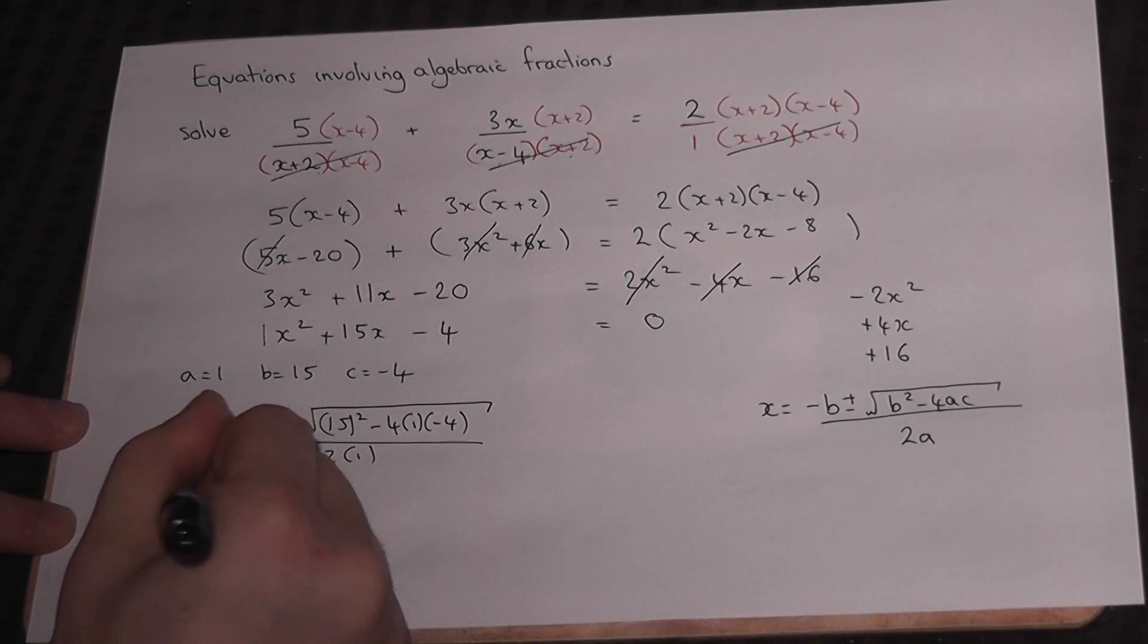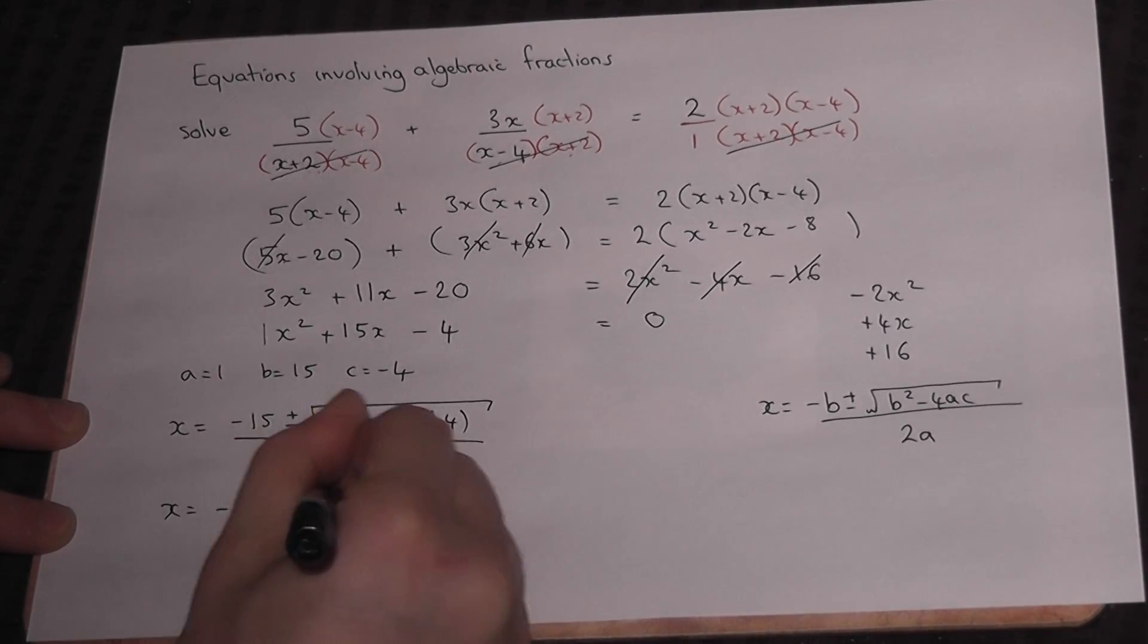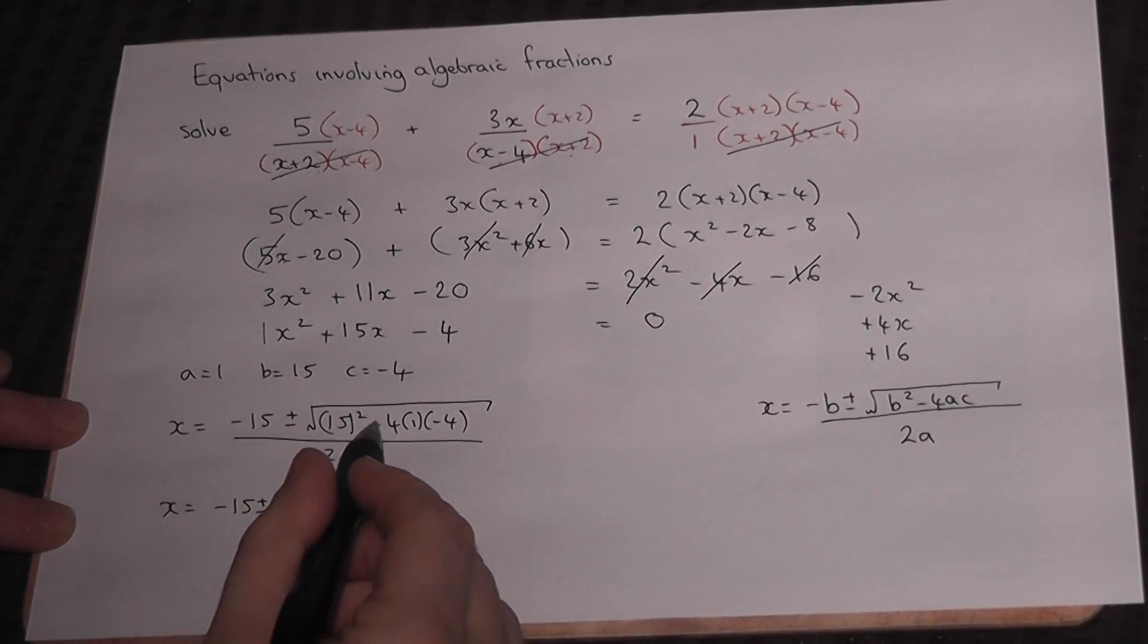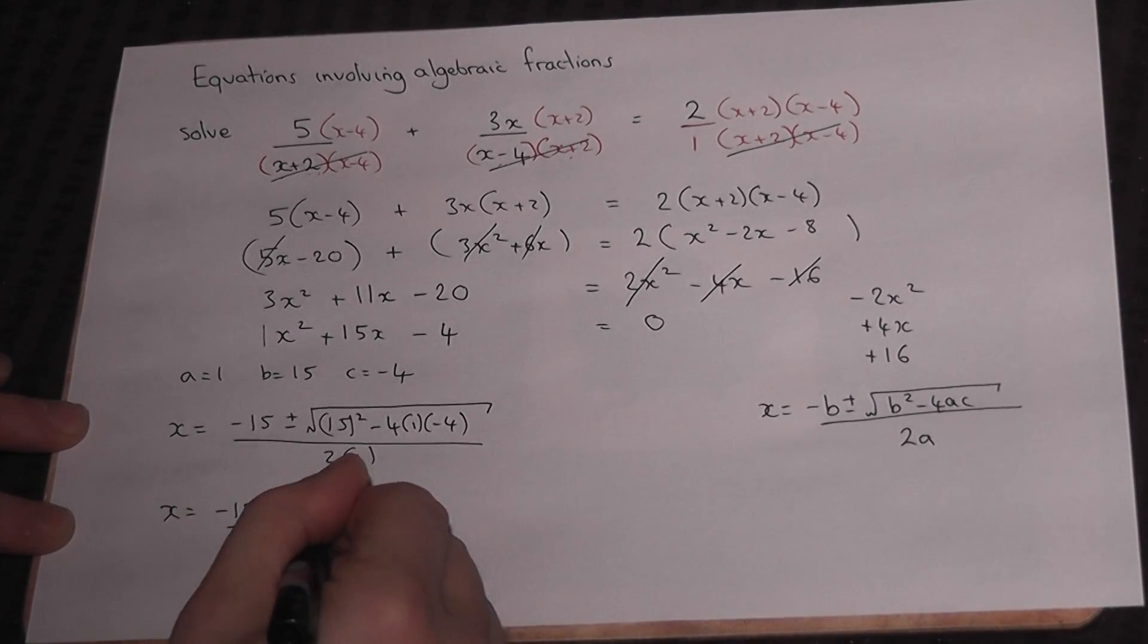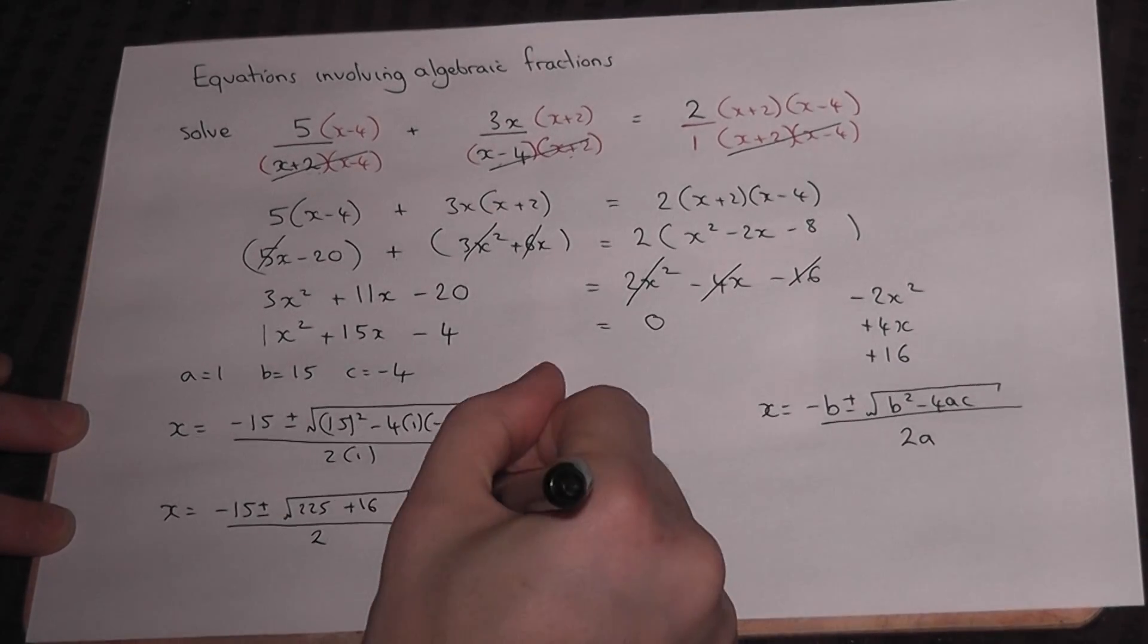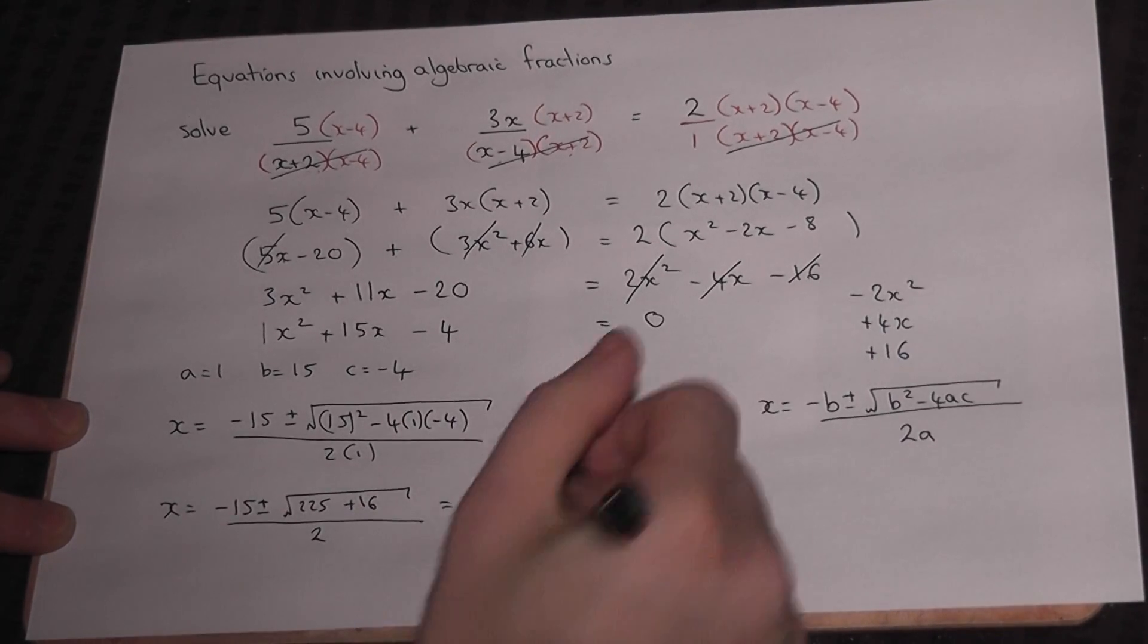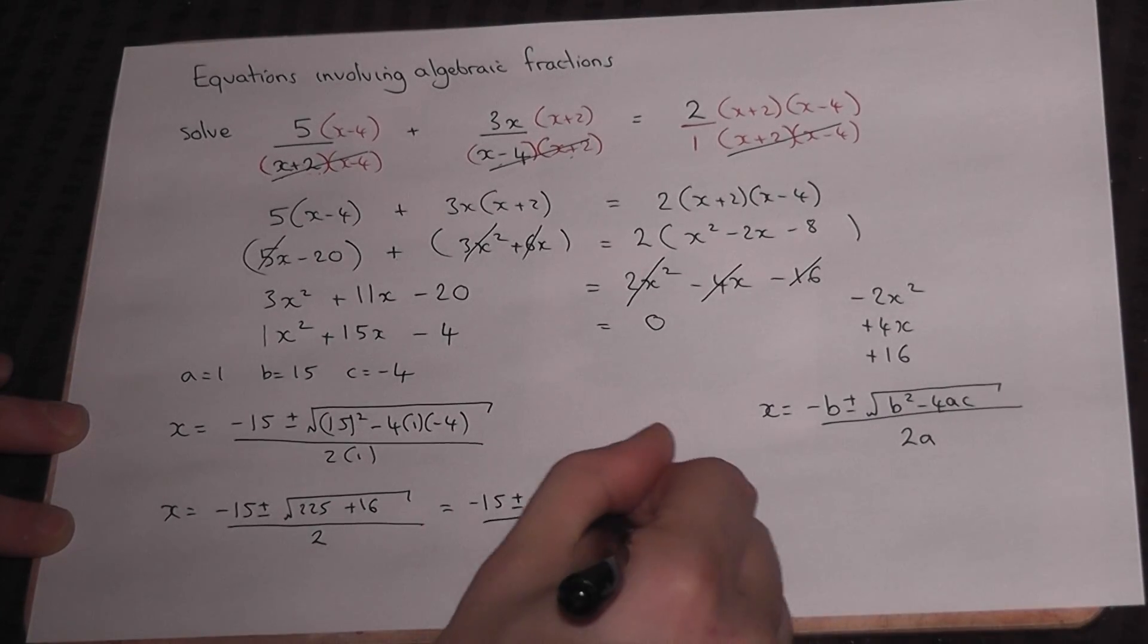So x equals minus 15 plus or minus the square root of 15 squared is 225, 4 times 4 is 16, 2 negatives goes positive, all divided by 2. Minus 15 plus or minus the square root of 225 plus 16, 241, all over 2.